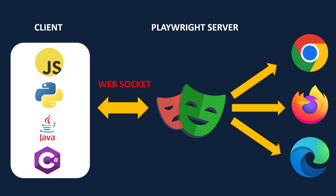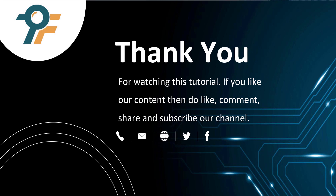Playwright then executes your test scripts on their respective browsers like Chrome, Firefox, and Edge. This is the simple Playwright architecture — the key takeaway is understanding how WebSocket works and how it makes Playwright different from other automation tools like Selenium and Cypress.